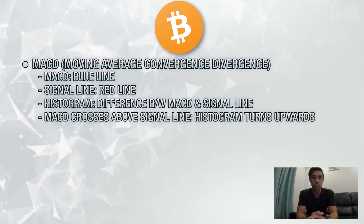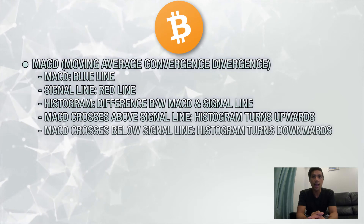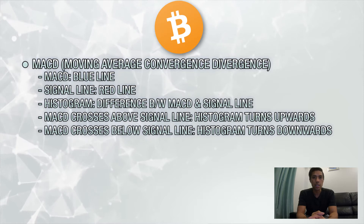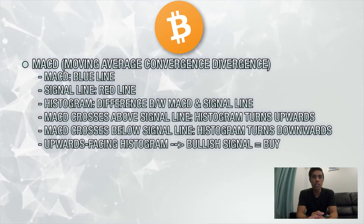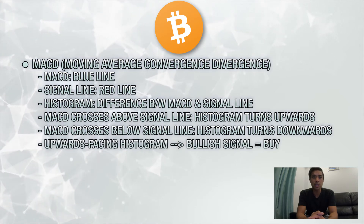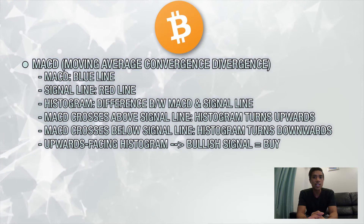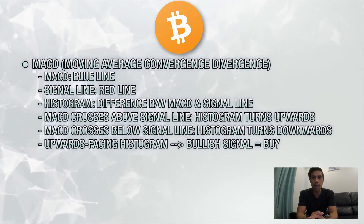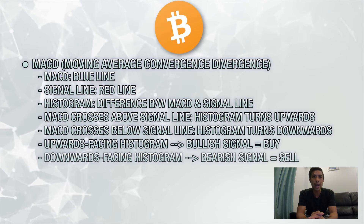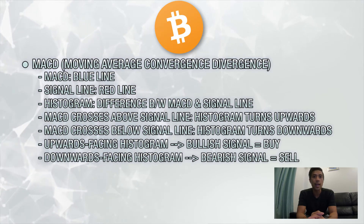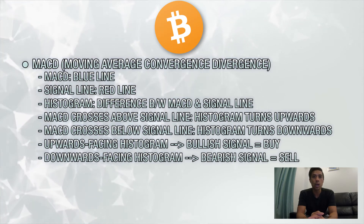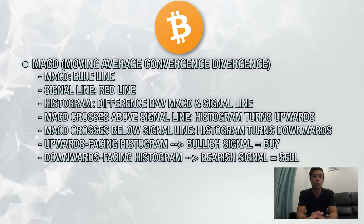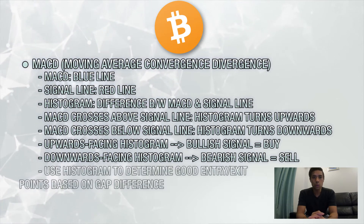When the MACD crosses above the signal line, the histogram appears turned upwards, and if the MACD crosses below the signal line, it turns downwards. Knowing this, an upwards-facing histogram, or when the MACD crosses above the signal line, is generally a bullish signal and may be a good time to buy. On the flip side, when MACD crosses below the signal line and the histogram is facing downwards, we have a bearish signal and it may be time to sell to avoid further losses.